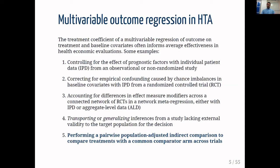There are a number of examples: controlling for the effect of prognostic factors in a randomized study, correcting for chance imbalances in an RCT, and meta-regression. Regression is also used to account for differences in the covariate distributions between different studies to transport inferences from a trial that is not externally valid to the target population. The case study I'm going to outline is performing a pairwise population-adjusted indirect comparison to compare treatments with a common comparator arm — this is the anchored scenario.